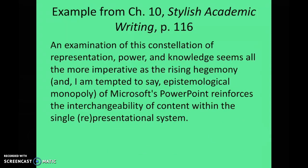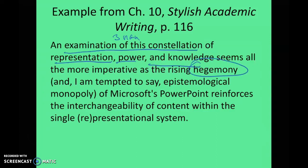Let's look at another example, this one from Helen Sword's work on academic writing. It's a very typical sentence from the social sciences and humanities: 'Examination of this constellation of representation, power and knowledge seems all the more imperative as reviving hegemony and — I'm tempted to say — epistemological monopoly of Microsoft's PowerPoint reinforces the interchangeability of content within the single representational system.' 'Examination of this constellation of representation' again packs three nouns in very close proximity. Hegemony is a term I had to look up every single time for the first three years of graduate school, and epistemological is still not entirely clear — it has to do with philosophical deliberations about where knowledge comes from. It's almost a show-off term.